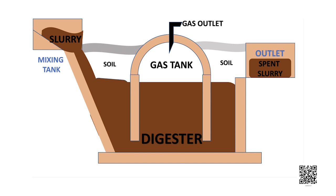Since the starting material is mainly cow dung, it is popularly known as gobar gas. This gas is produced in a special place called the biogas plant. The plant has a dome-like structure which is built with bricks. A slurry of cow dung and water is made in the mixing tank, from where it is fed into the digester. The digester is a sealed chamber in which there is no oxygen.